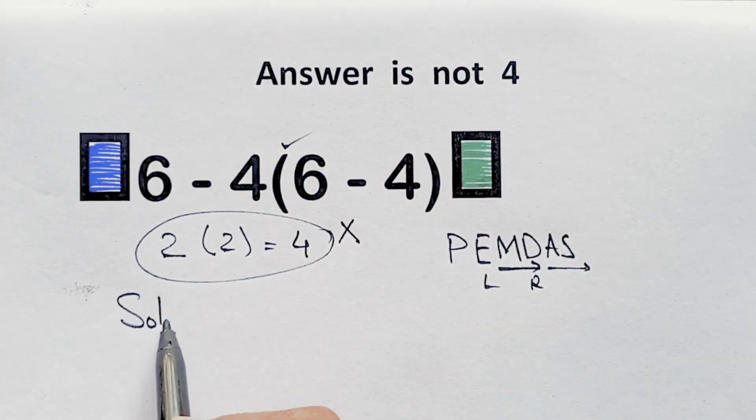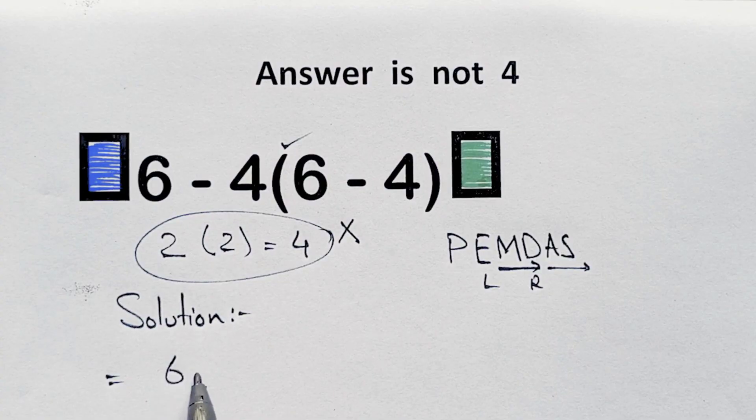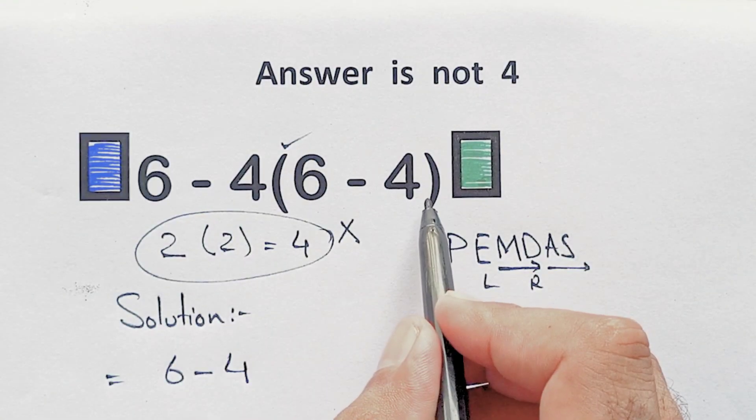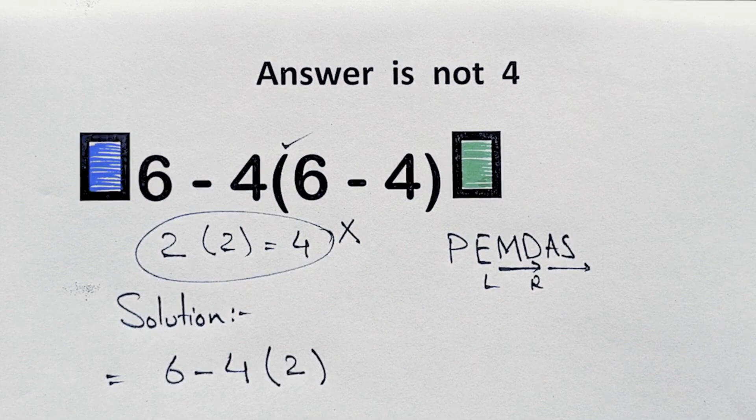Now we start with the correct solution. So here we have six minus four, and this parenthesis, and inside this parenthesis, we have six minus four, which equals to two.